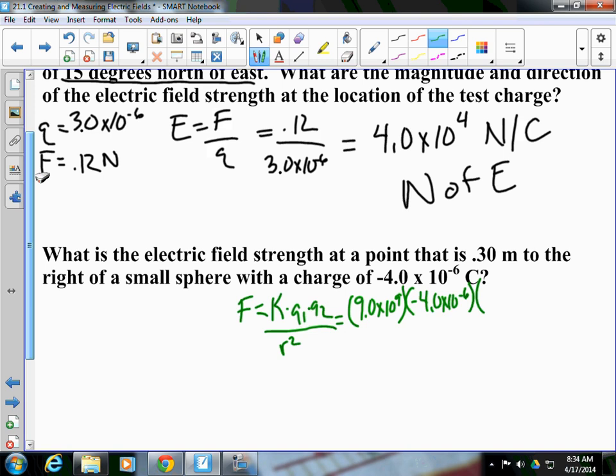q2 is going to be our test charge from the first example. In the first example, our test charge was 3.0 times 10 to the negative 6. It states they're separated by 0.3 meters, so we're going to take 0.30 and square it. And when we do that, we're going to figure out our force is negative 1.2 newtons.